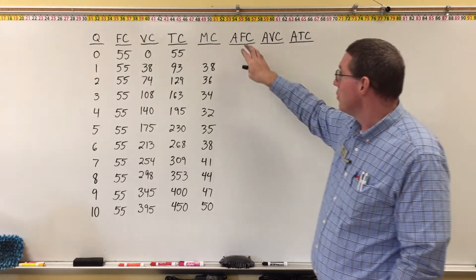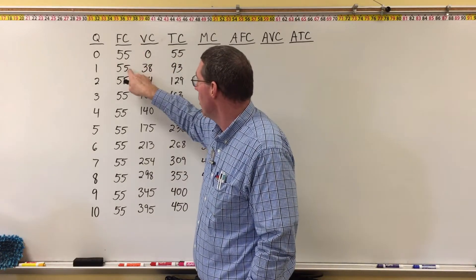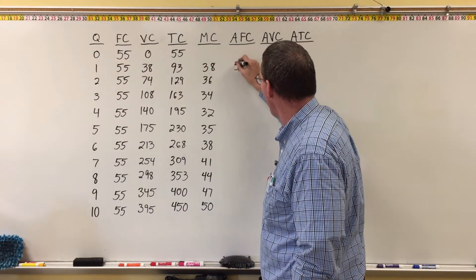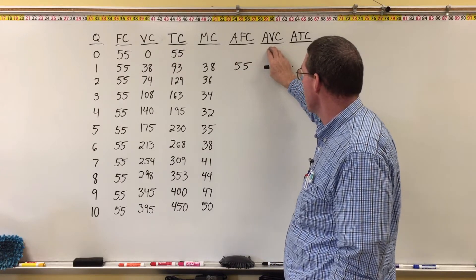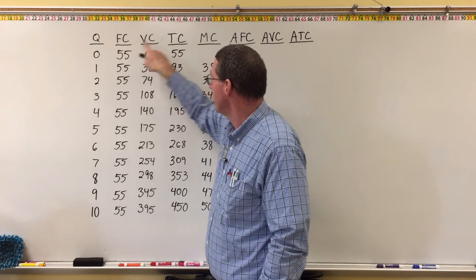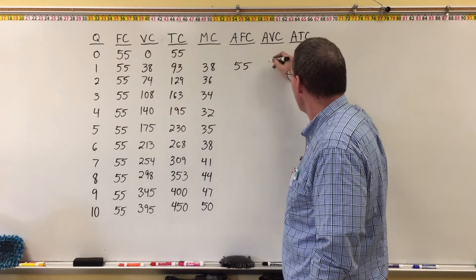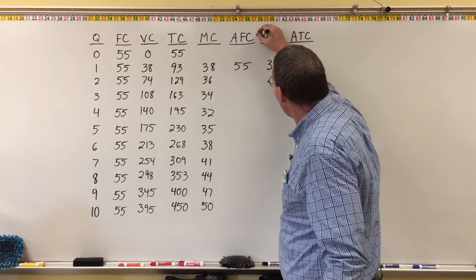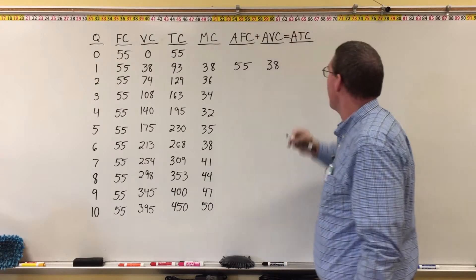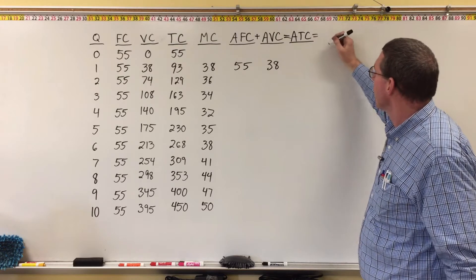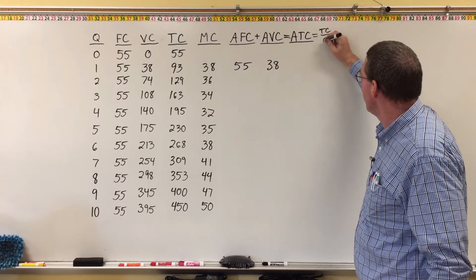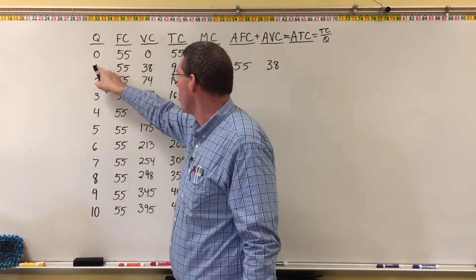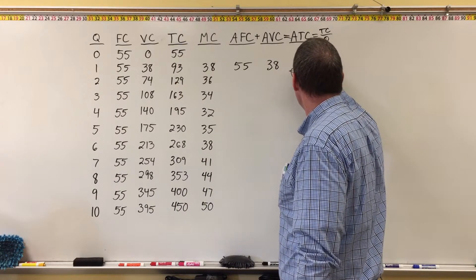Average fixed cost is equal to fixed cost divided by quantity — so here, 55 divided by 1 is 55. Average variable cost is variable cost divided by quantity, so that's 38 divided by 1, which is 38. Average total cost can be calculated in two different ways: you can add average fixed cost and average variable cost, or you can do total cost divided by quantity. For example, 93 divided by 1 gives an average total cost of 93.